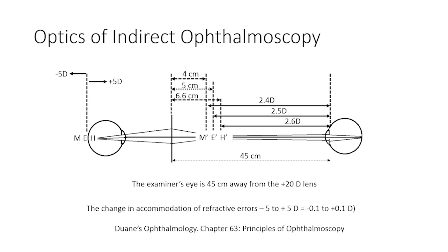Thus, gross changes in refractive errors will not lead to gross changes in the accommodative demand on the examiner. That is why gross refractive errors do not have an impact on the clarity or focus of the fundus image with indirect ophthalmoscopy. Whereas in the direct method, one needs to interpose the appropriate correction lenses on the aperture disc to adjust the focus in eyes with refractive errors.